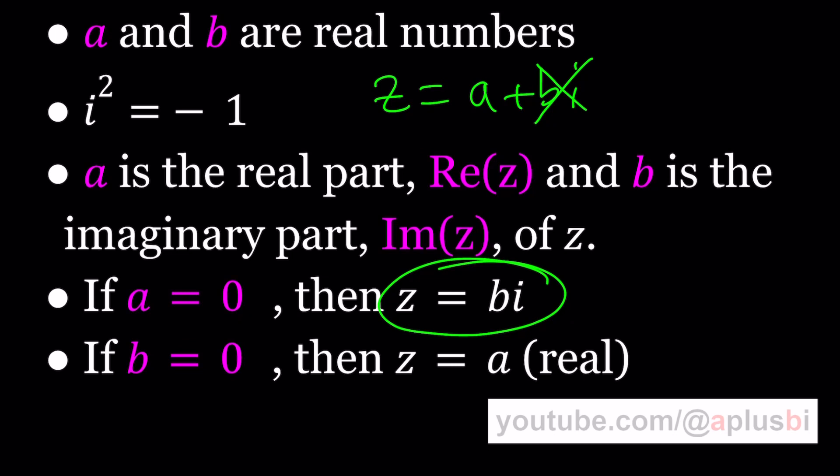This also tells you that any real number can be written as A plus B i where B is 0. In other words, every real number is also a complex number, which also means real numbers is a subset of complex numbers. But that's set theory. Don't worry about that right now. Just focus on the definition, two things you need to know: A plus B i is a complex number and i squared equals negative 1. Keep it simple, right?